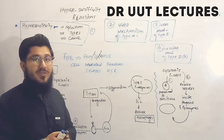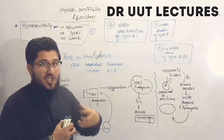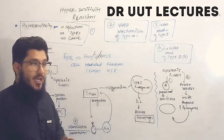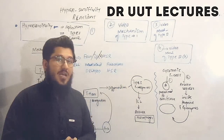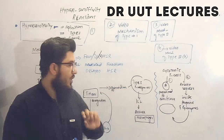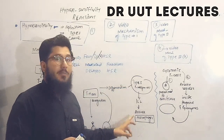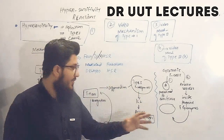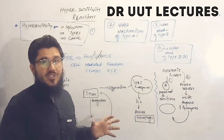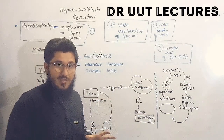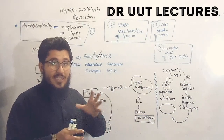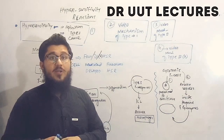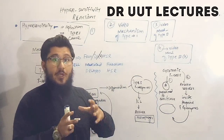After binding, the antigen presenting cells release interleukin-12. These interleukins stimulate the T helper cells, which then undergo differentiation into type 1 T helper cells. These Th1 cells release interleukin-2, which activates macrophages. The macrophages — the destructive cells — target the cells where antigens are present and destroy those tissues and cells.